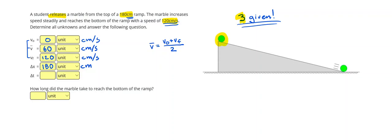And finally, I can look for the time. So, I know that displacement equals average velocity times delta t, or dividing both sides by the average velocity, I can get the time using the displacement divided by the average velocity. So, 180 divided by 60 is going to give me exactly three seconds.